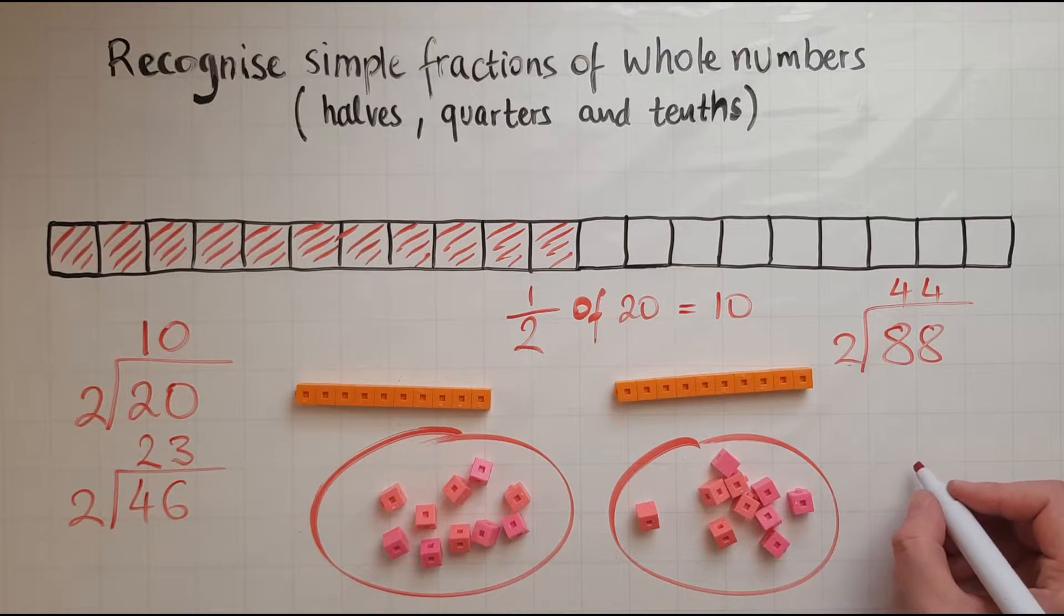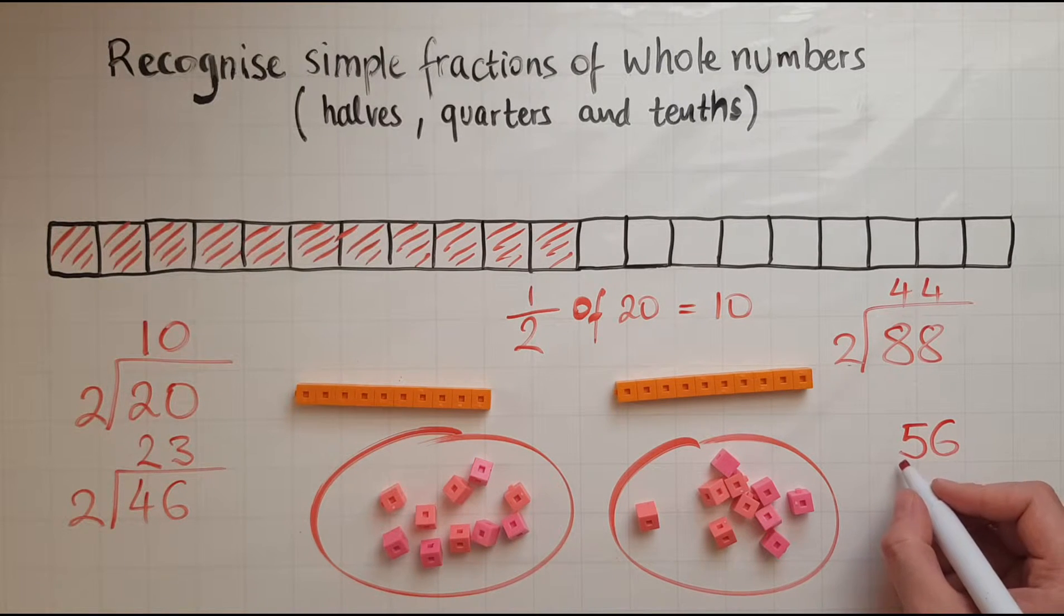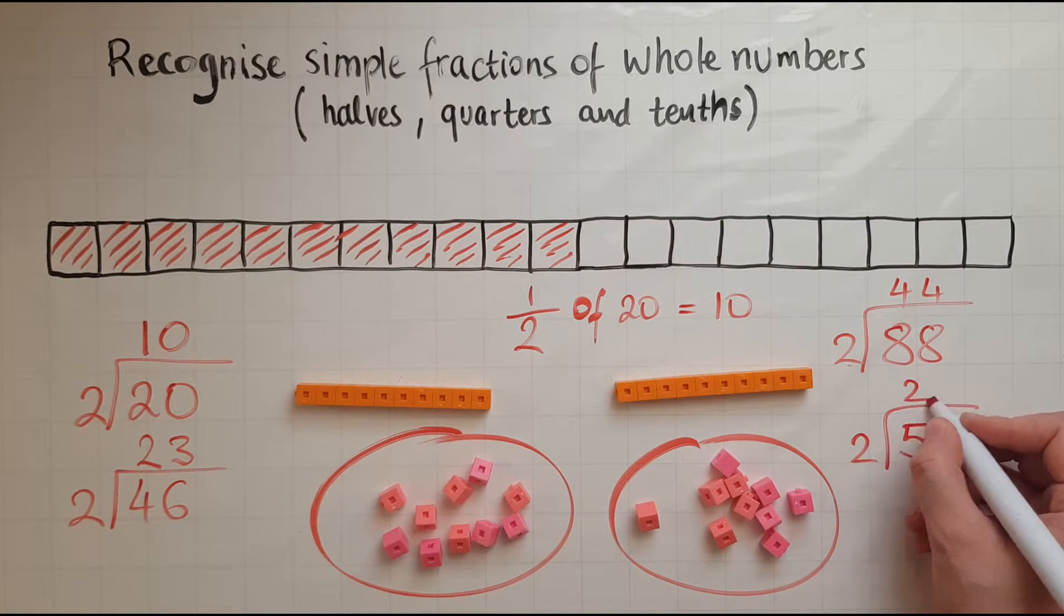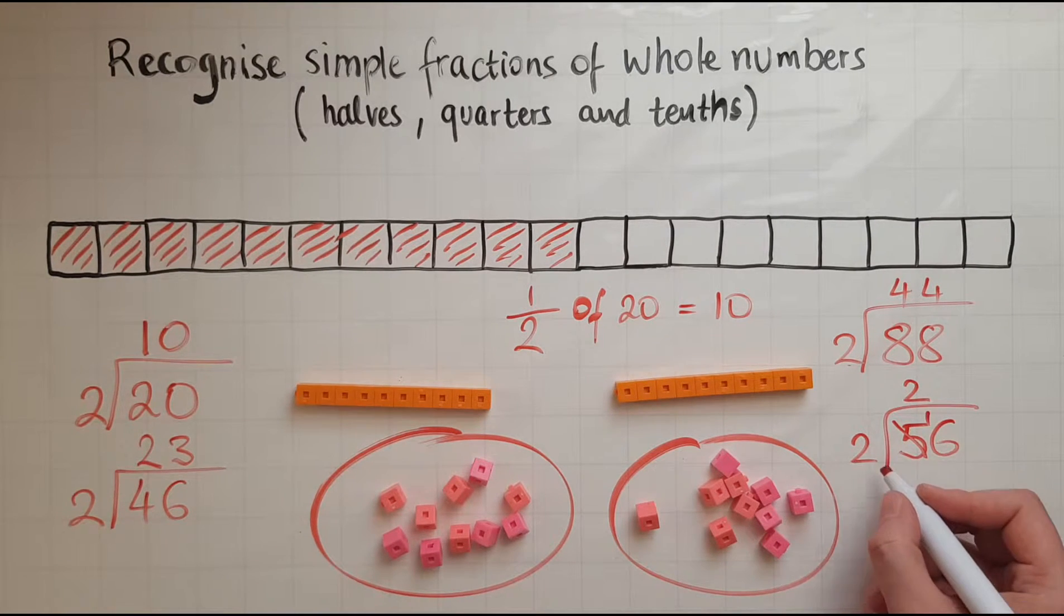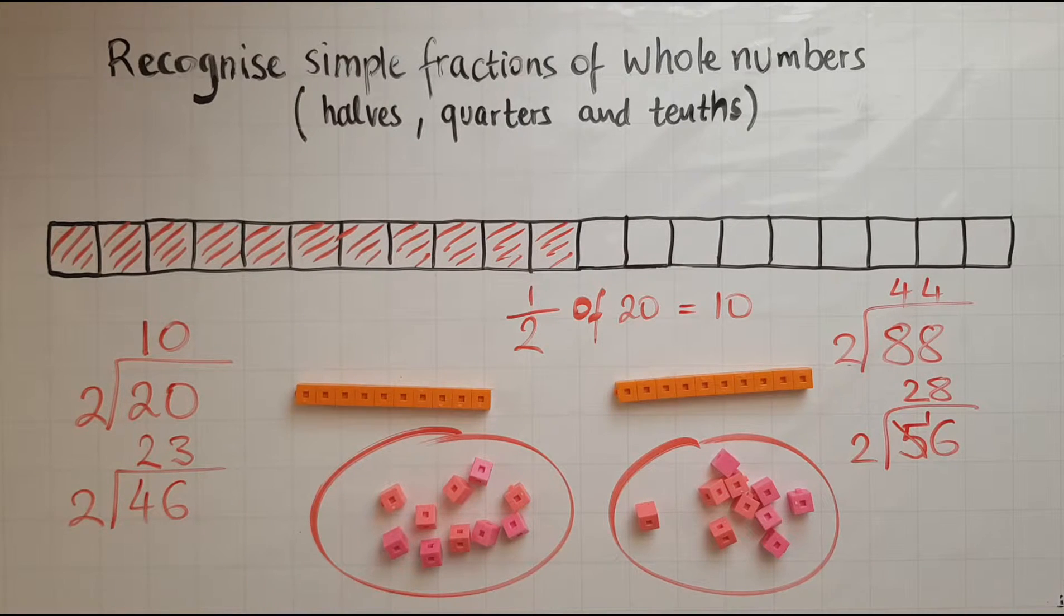And a final one. Let's say 56. So how many twos fit into 5? That is 2, and there is 1 remaining. How many twos into 16? That is 8. So my answer is 28 for that. And this is how you find half of a number.